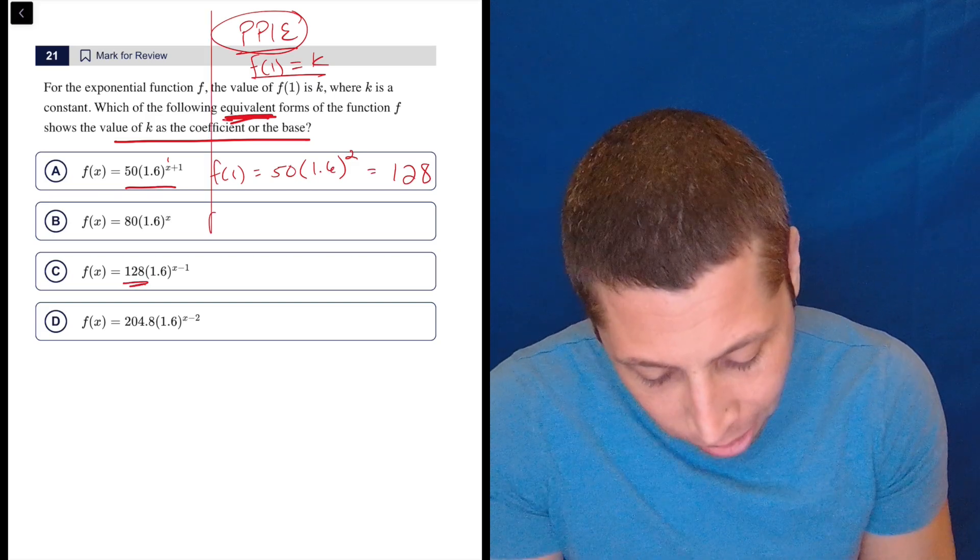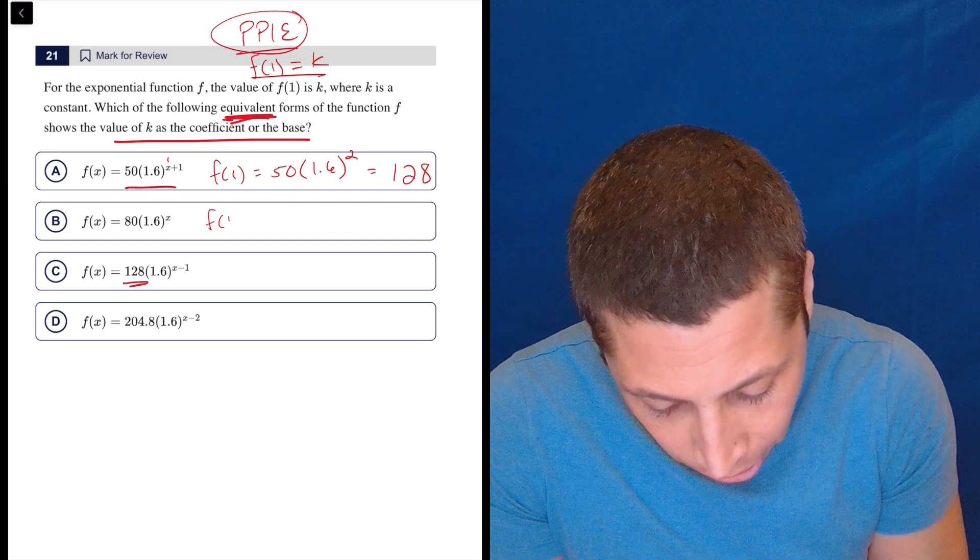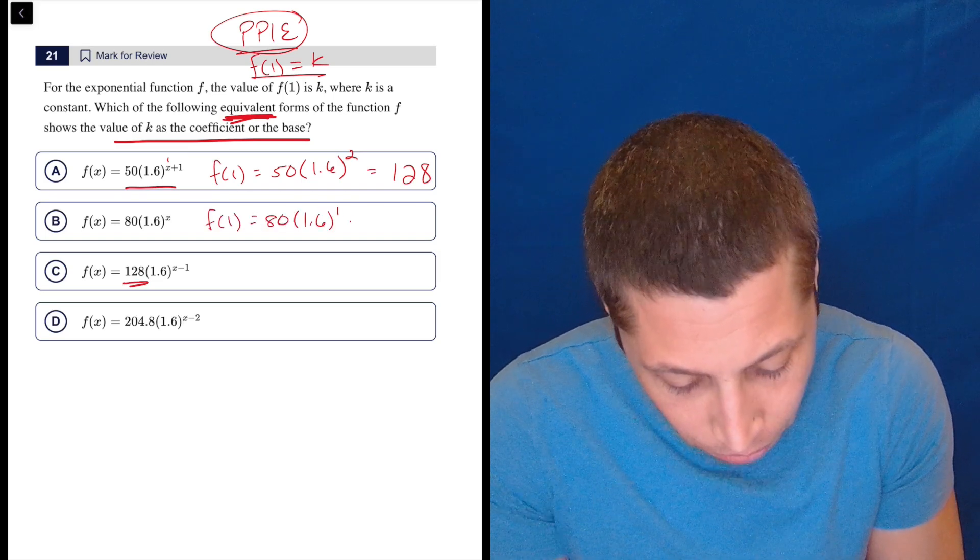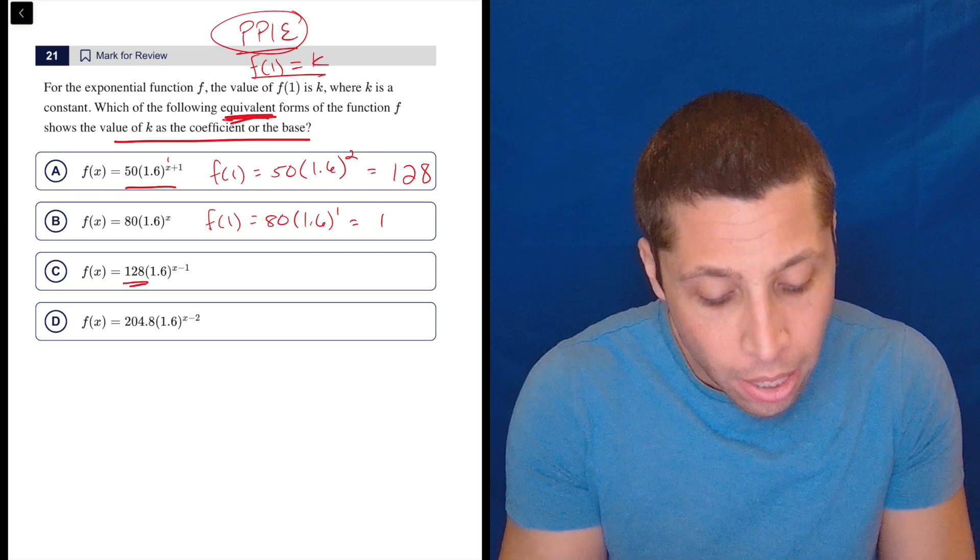Because watch, let's see what happens. So again, that's weird. I'm going to be much more thorough than I would have been on the real test here. So f of 1 here is 80 times 1.6 to the first. So 80 times 1.6, I'm just going to verify what I already know, is 128.